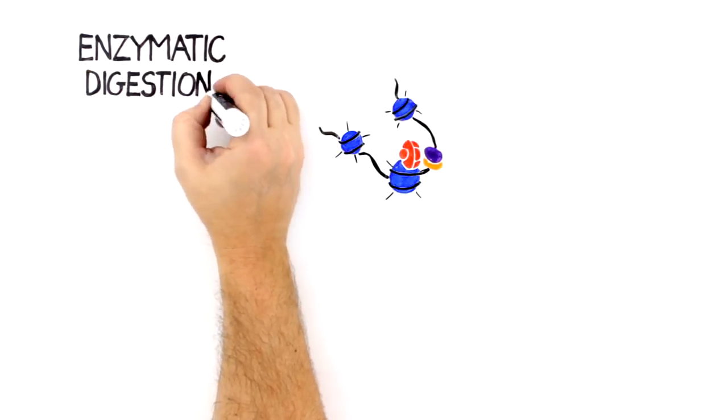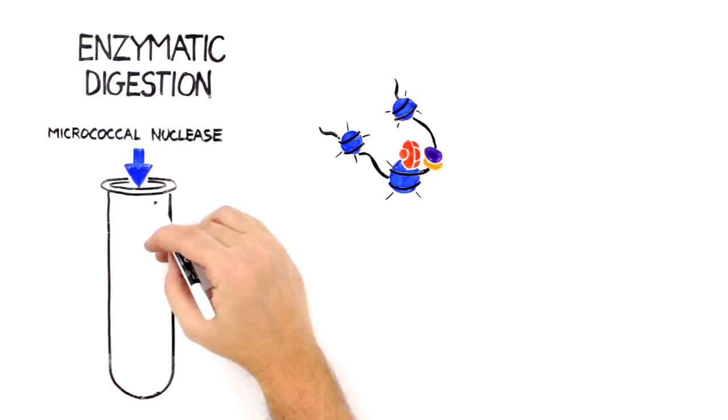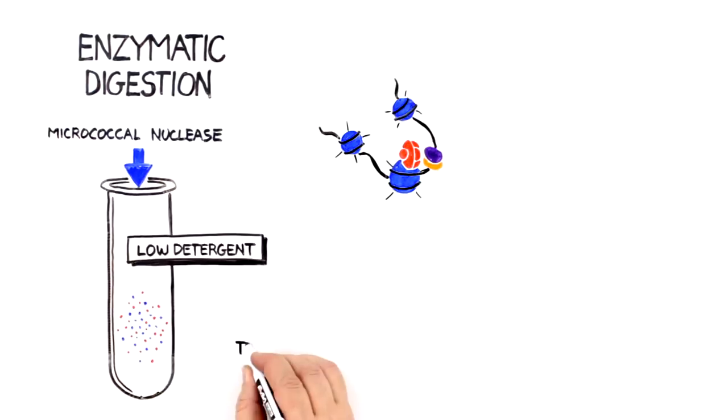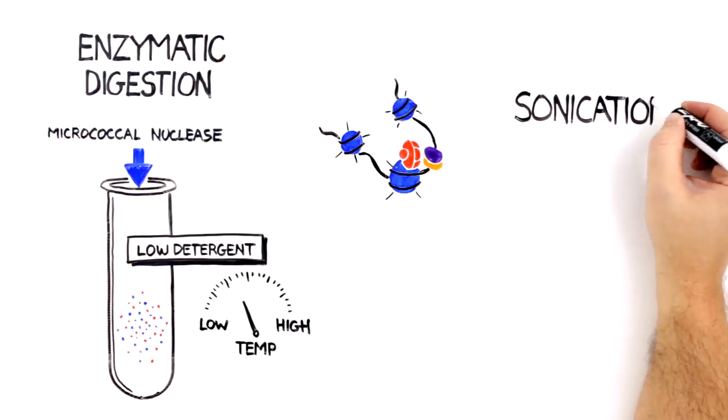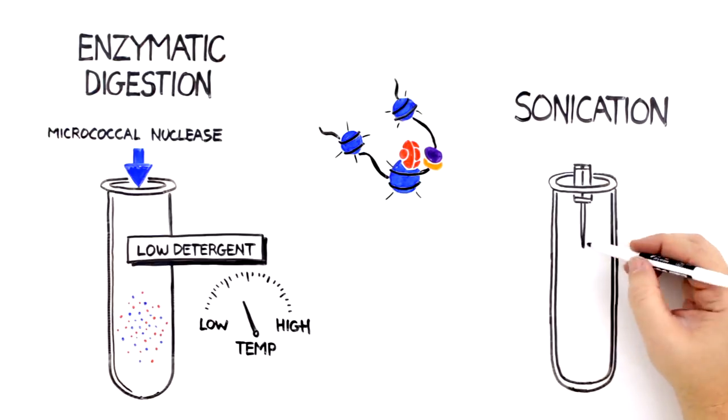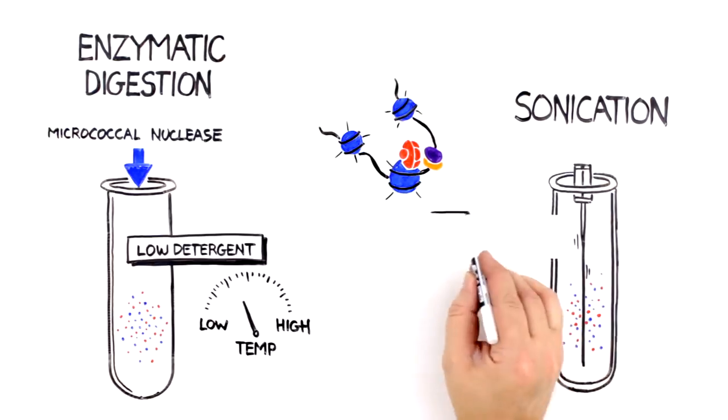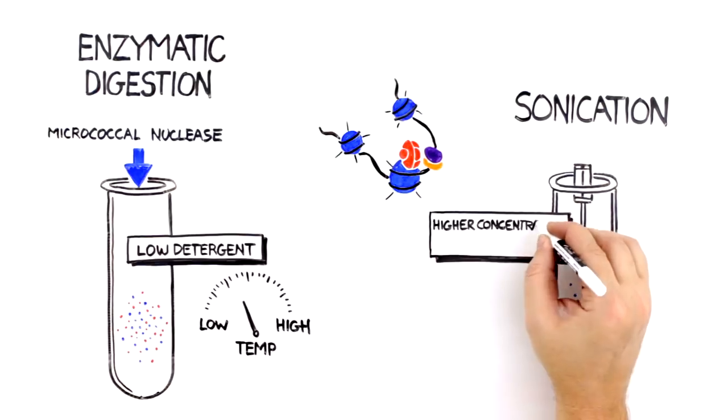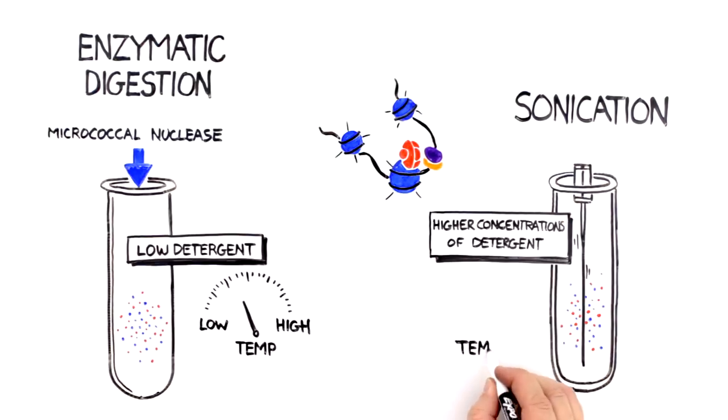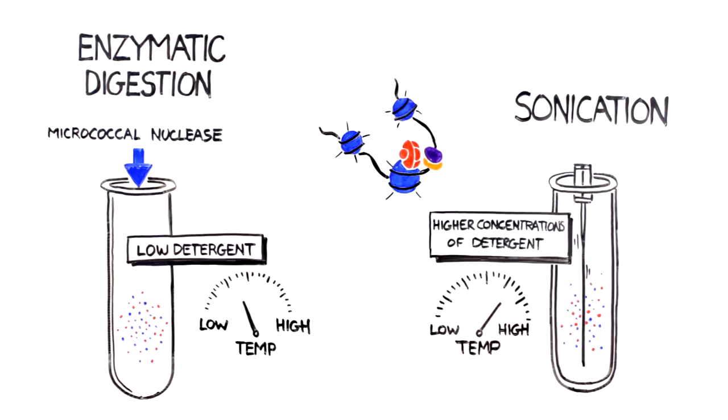Enzymatic digestion uses micrococcal nuclease to gently digest the DNA under low detergent and low heat conditions. Sonication is a much harsher method, which uses mechanical force to shear the DNA. Sonication typically requires higher concentrations of detergents and the mechanical shearing generates heat, resulting in harsh conditions that can denature chromatin proteins.